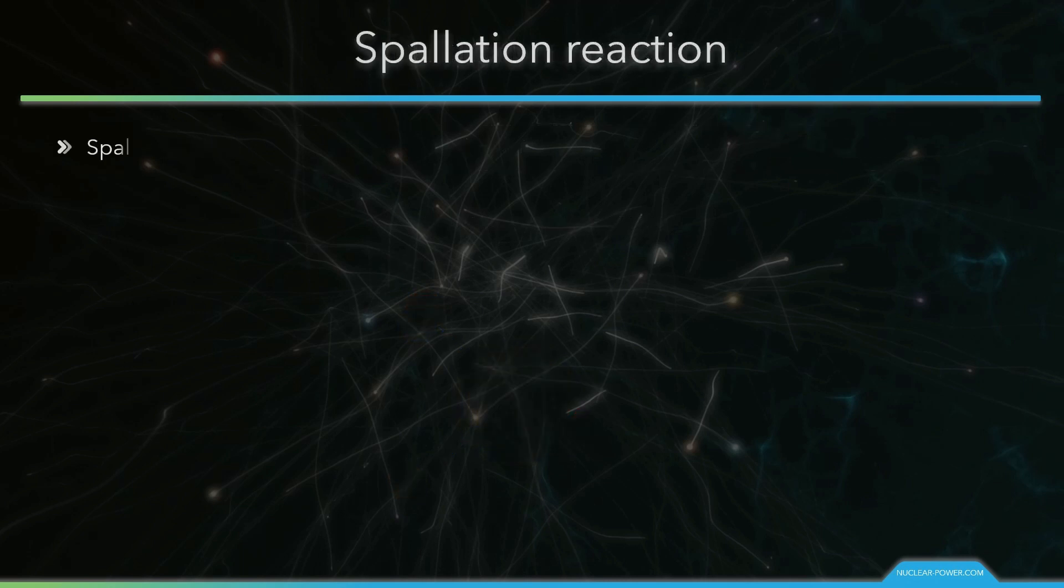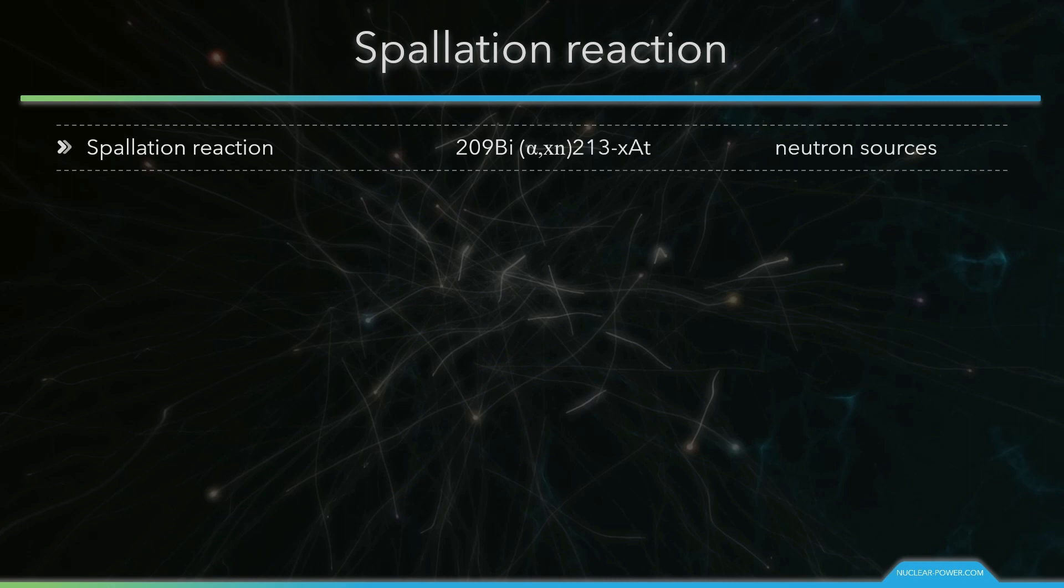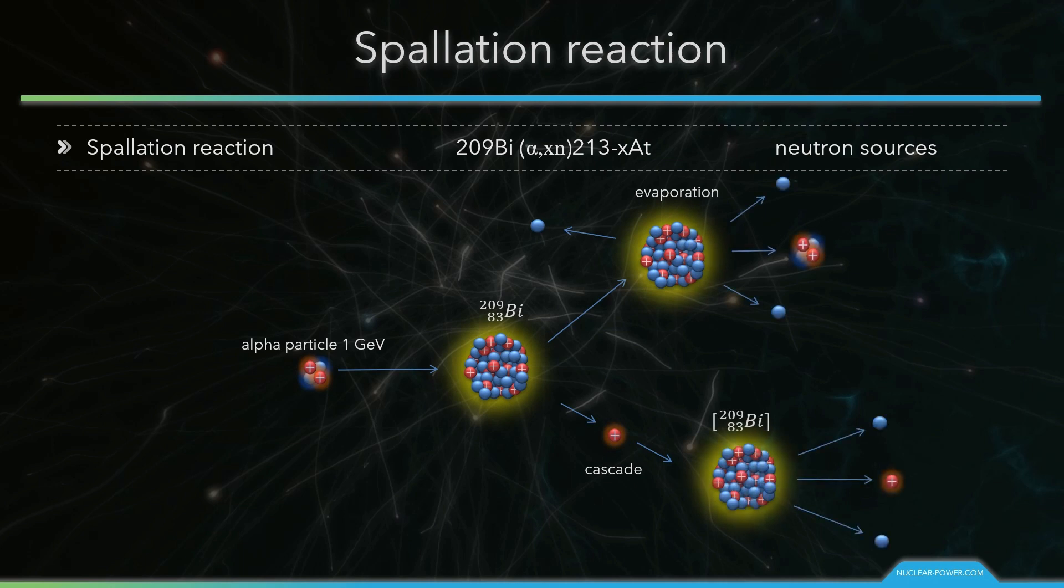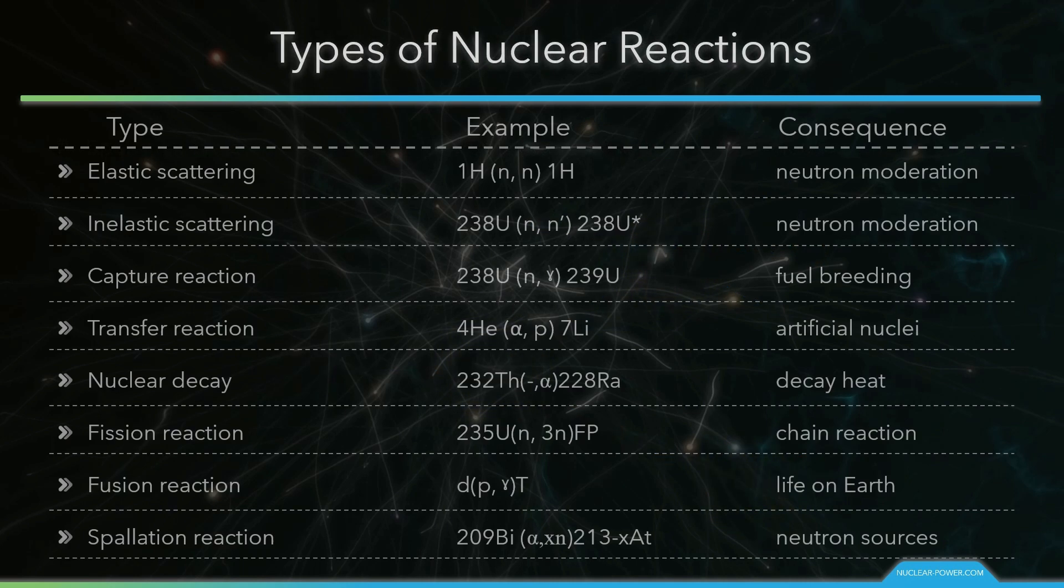Spallation reaction occurs when a particle hits a nucleus with sufficient energy and momentum to knock out several small fragments or smash them into many fragments. Nuclear spallation is one of the processes by which a particle accelerator may be used to produce a beam of neutrons. This is the basic division of all nuclear reactions. But the actual number of reactions is really enormous.